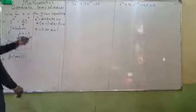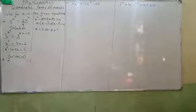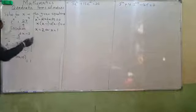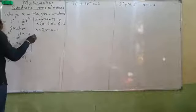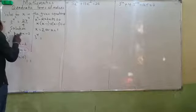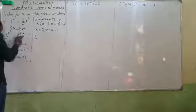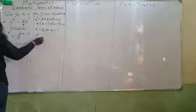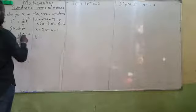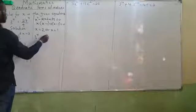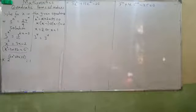Now these are the possible values. If I put x equals 2: 3 raised to the power 2² equals 3 raised to the power 4. And on the other side, 3(2) minus 2 equals 4, so 3 raised to the power 4. Can you see? It's correct.